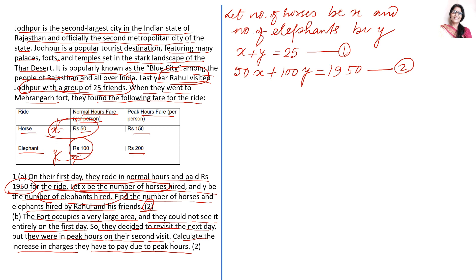We can divide this equation 2 with 50 to make it lowest. So it will be X plus 2Y is equal to, if I divide 1950 by 50, it will be 39. This is your equation 2 in simplified form.